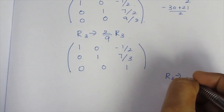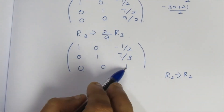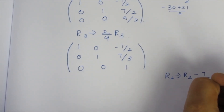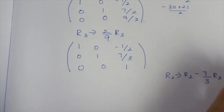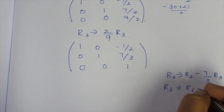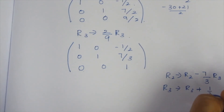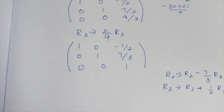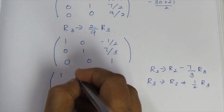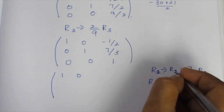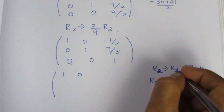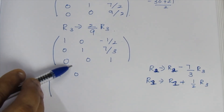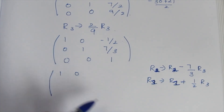Continuing with Rho 2 and Rho 3 row operations. Applying R1, R2, R1 transformations followed by R3. Final row operations R1, R1, R1, R2 and R3 bring the matrix to the identity form, completing the reduction.